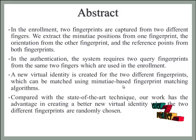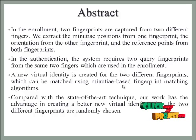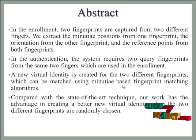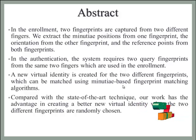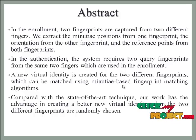We propose a novel system for protecting fingerprint privacy by combining two different fingerprints into a new identity. In the enrollment, two fingerprints are captured from two different fingers. We extract the minutiae positions from one fingerprint, the orientation from the other fingerprint, and the reference points from both fingerprints. Based on this extracted information and our proposed recording strategies, a combined minutiae template is generated and stored in a database.